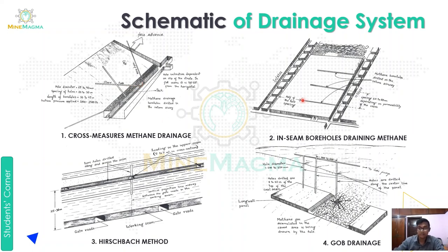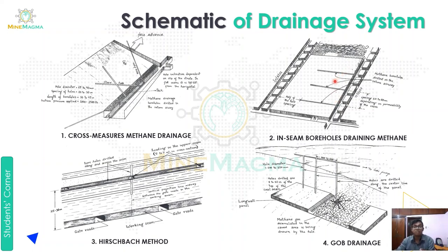The second method is in-seam borehole drainage. Here, methane boreholes are made in the return airway. The spacing varies between 10 to 80 meters depending on the permeability of the seam. Boreholes are drilled into the seam so that whatever gas is accumulating comes through the return airway and out through ventilation. This is our in-seam borehole drainage method — the borehole is inside the seam and we drain the methane from there.